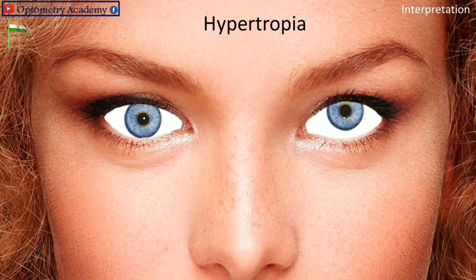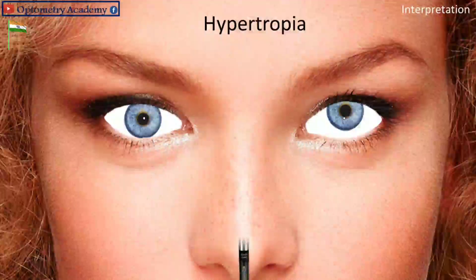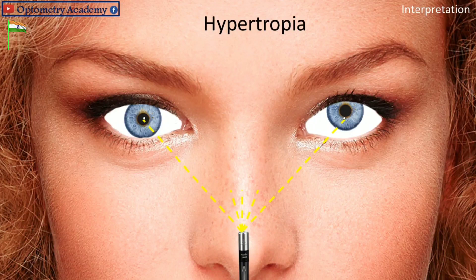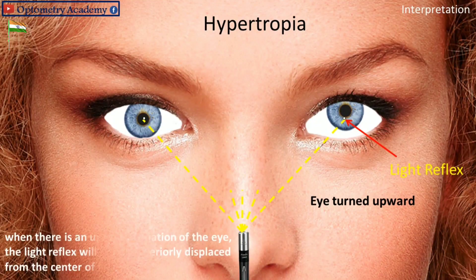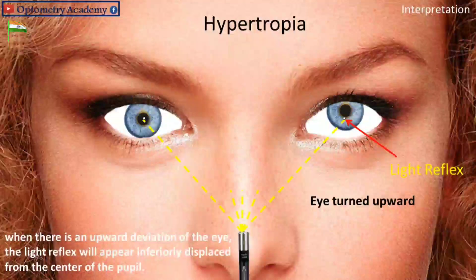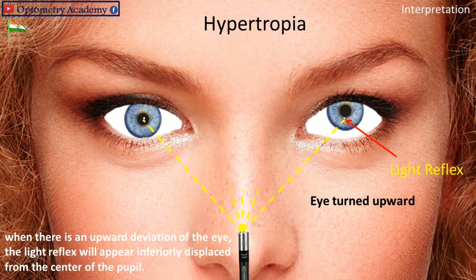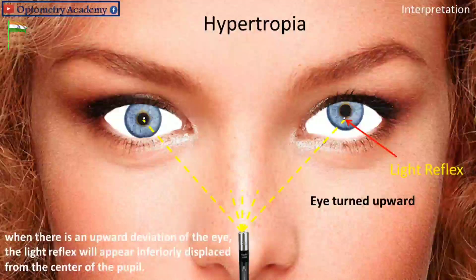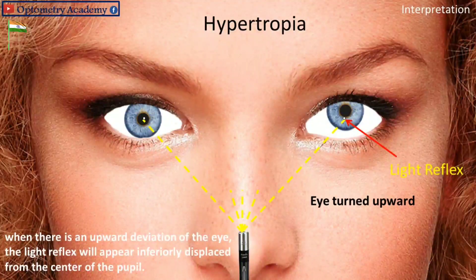Hypertropia — eye turned upward: When there is an upward deviation of the eye, the light reflex will appear inferiorly displaced from the center of the pupil.